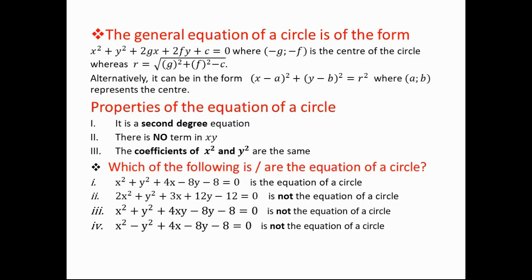Number one: x squared plus y squared plus 4x minus 8y minus 8 equals zero. For it to be an equation of a circle it must satisfy the three properties. It must be second degree, there must be no multiplication between x and y, and the coefficients of x squared and y squared must be the same. Excellent — so it is an equation of a circle.